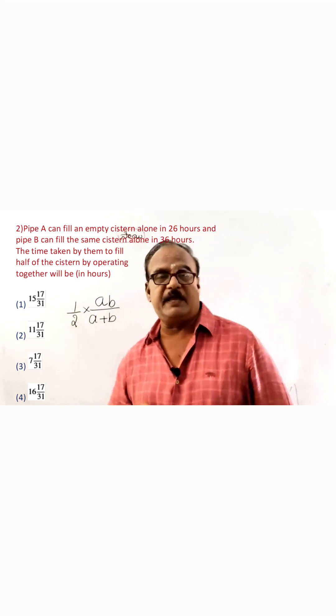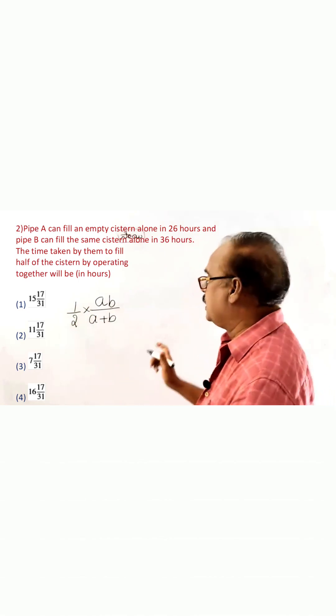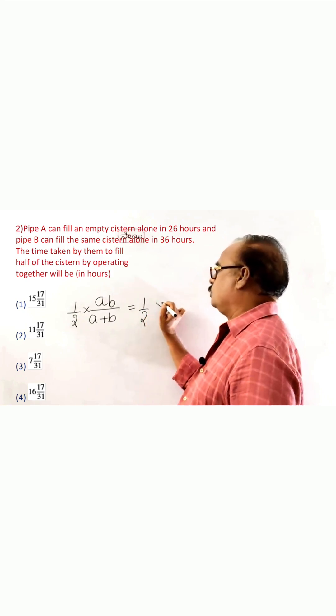1 by 2 into V by A plus B. Full tank will be V by A plus B, half of the tank will be filled. That is we will take it as half of, into, 26, 36.